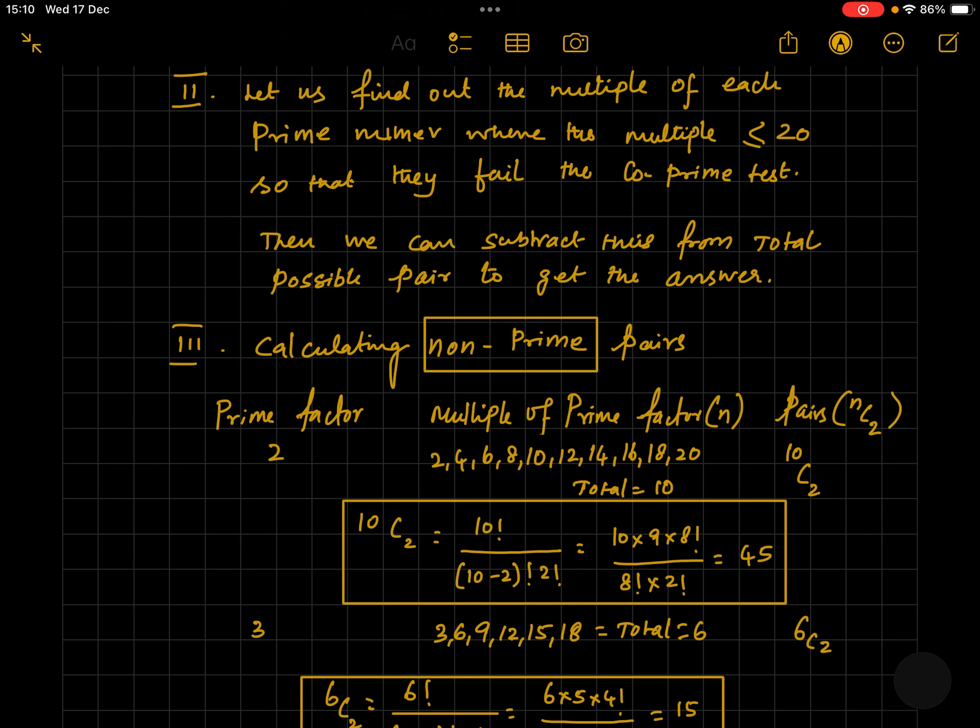So now how to calculate the non-co-prime pairs? Let's first take the prime factor 2 and find out the multiples of 2 which are less than or equal to 20. We have 2, 4, 6, 8, 10, 12, 14, 16, 18, and 20.